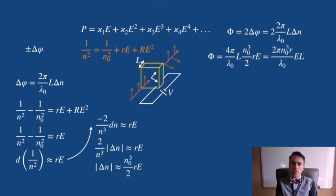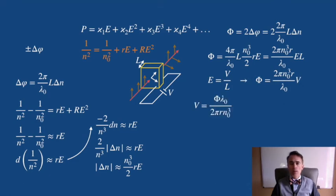Because we are applying a voltage to the crystal, we can write E as V over L. So we have the potential to be applied to the Pockel cell.